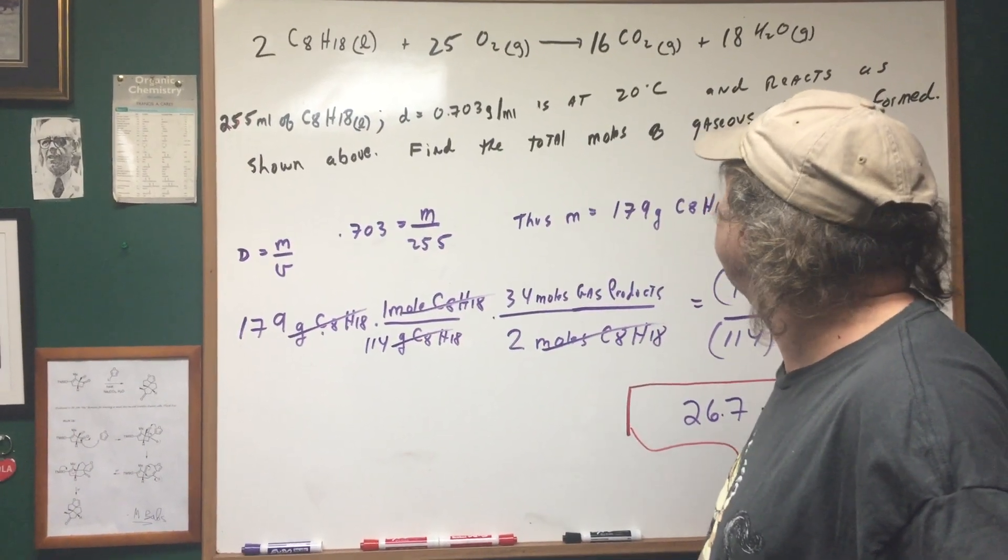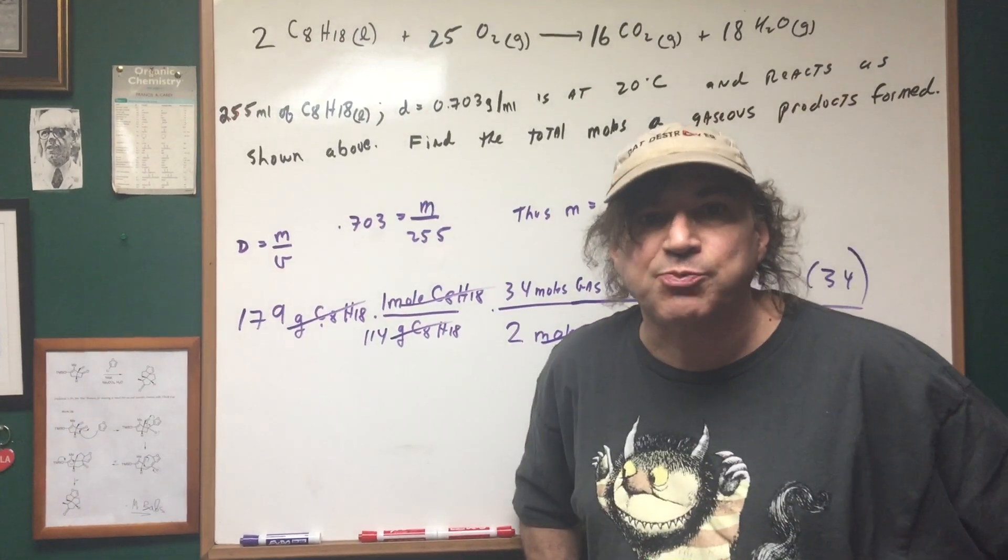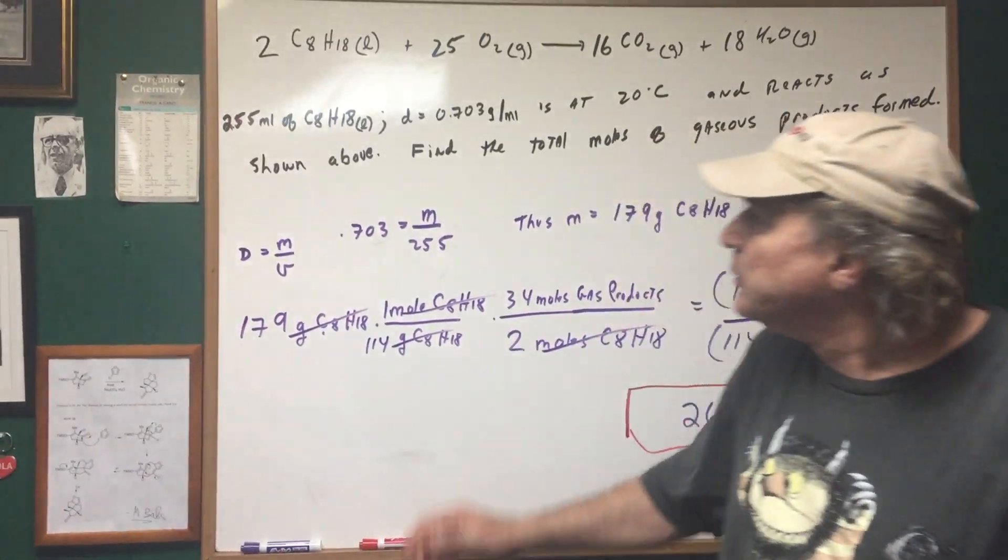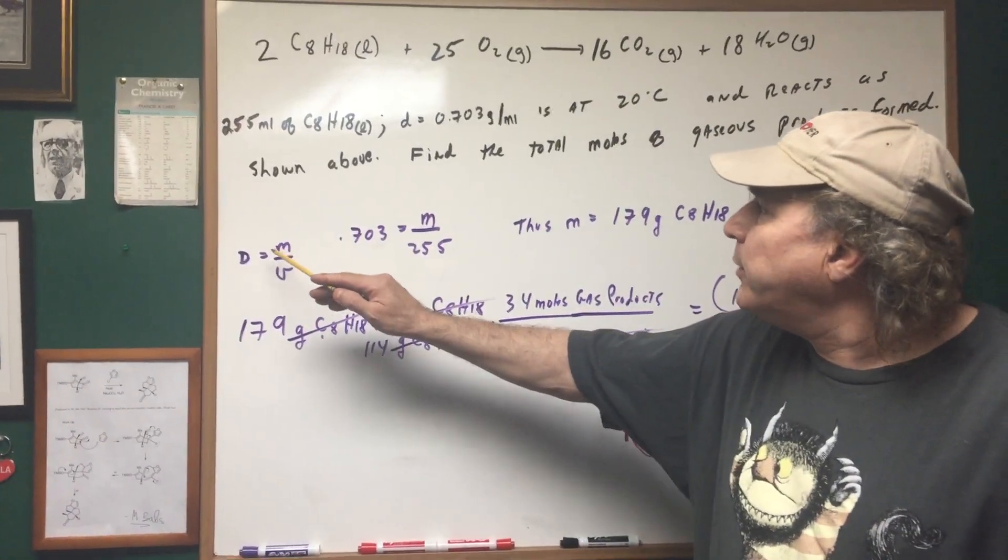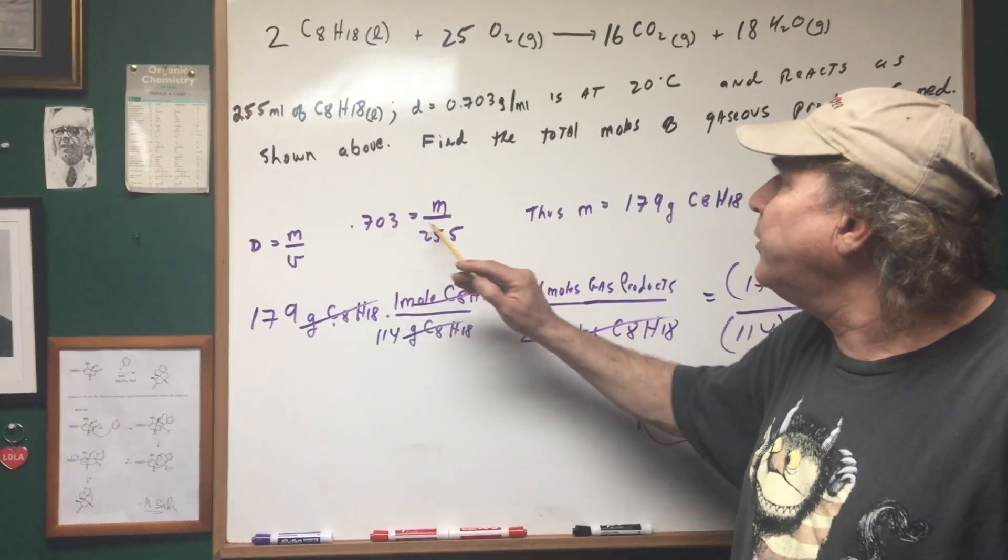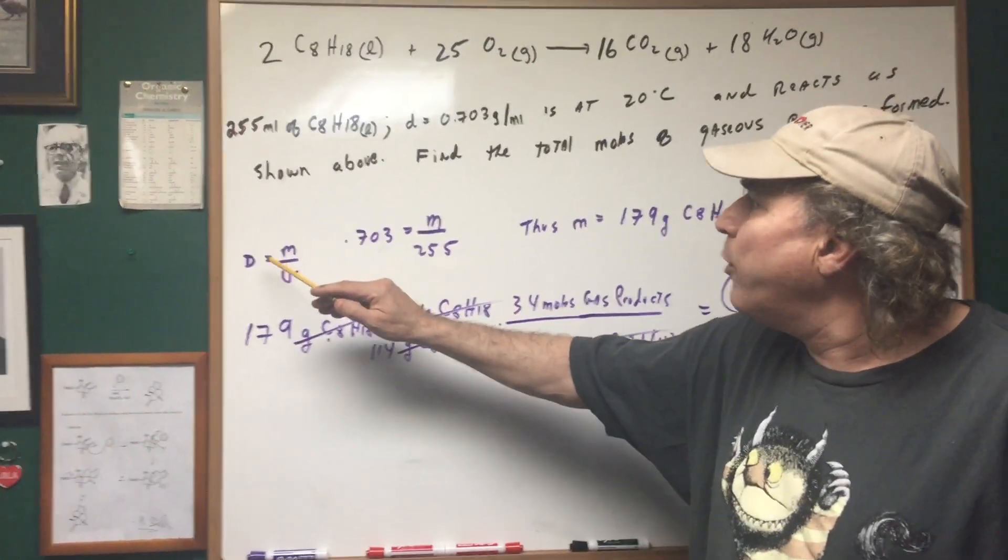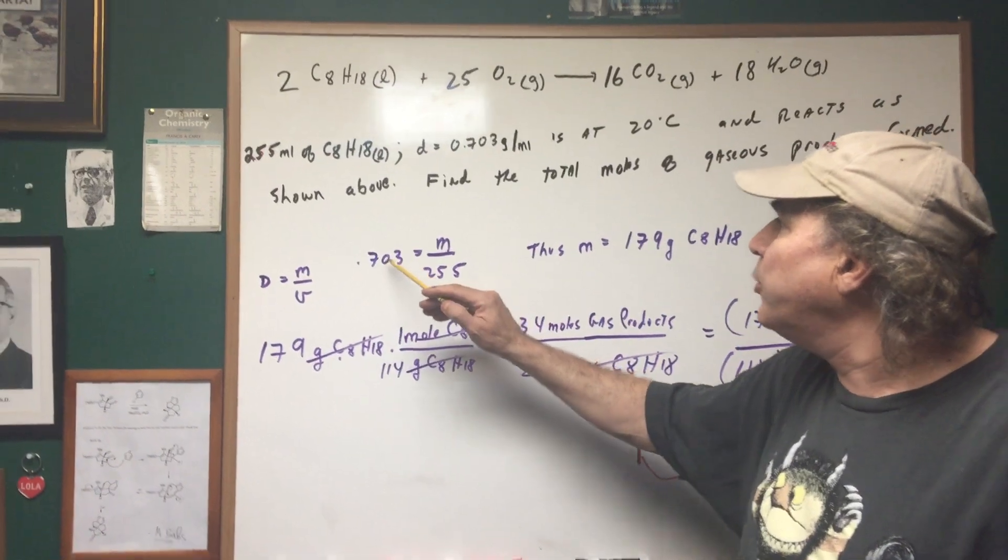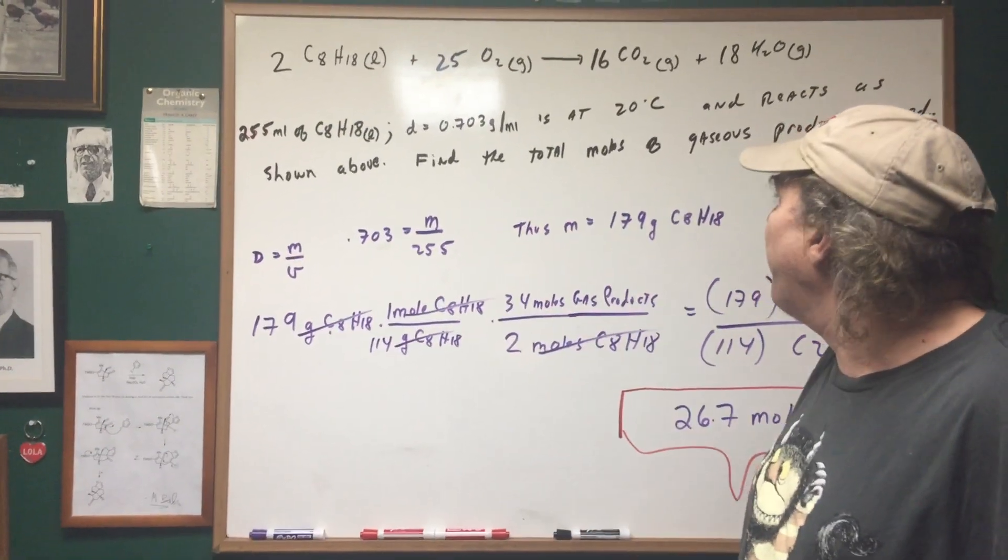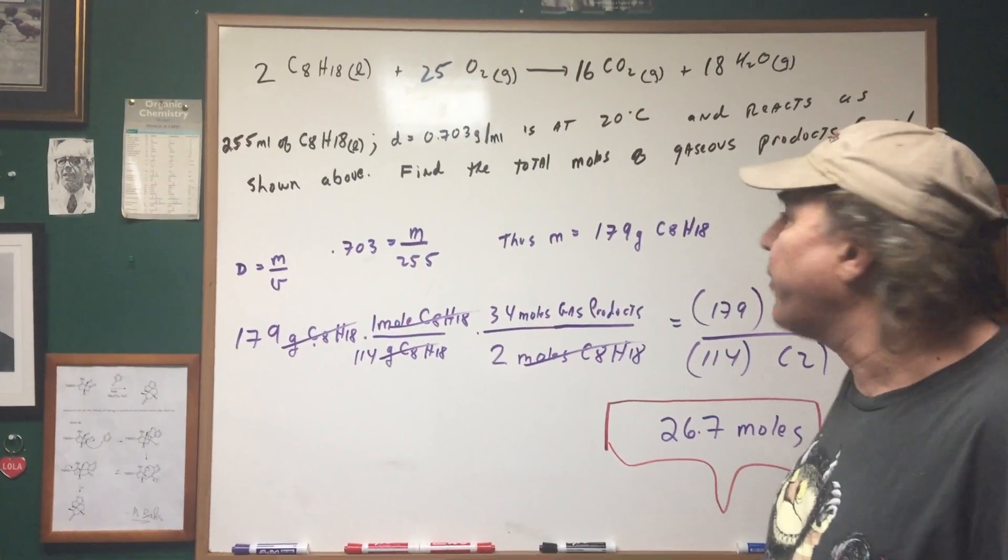What I want to do is find the total moles of gaseous product that's going to be formed. So I go to the liquid and I know the density of the liquid and I know the volume. So if we know the density and the volume and you plug it in, you would find the mass is 179 grams.